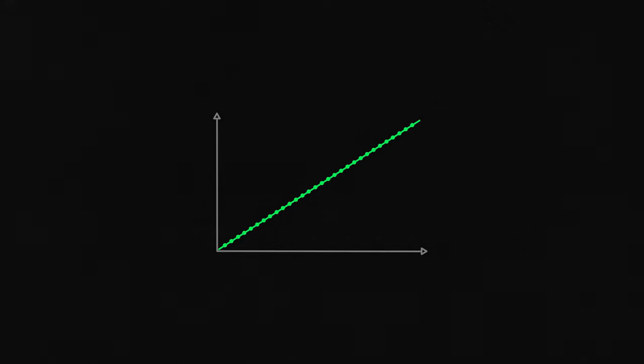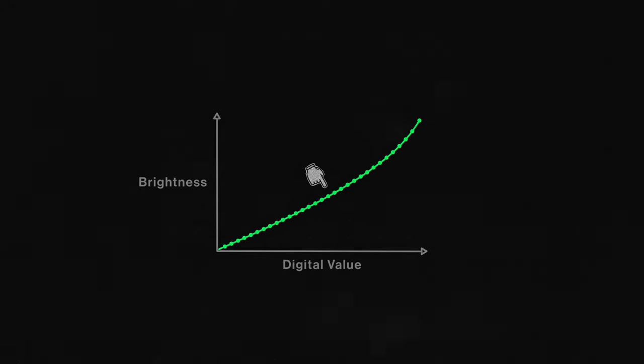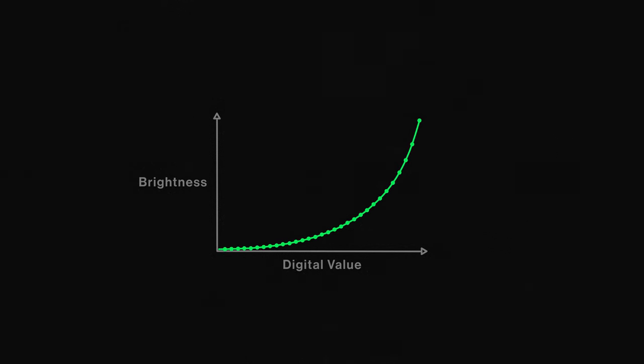Most importantly for us, that 12-bit linear image is mapped onto an 8- or 10-bit logarithmic curve. This logarithmic processing is a further step of simplification, where our footage is mapped onto a non-linear curve of values. Doing this lets the camera store less data, and only the data that's important to human vision.